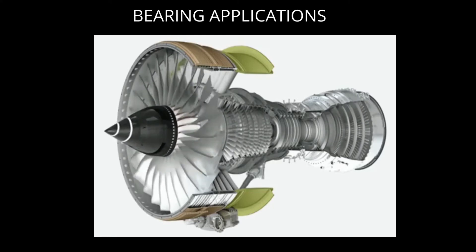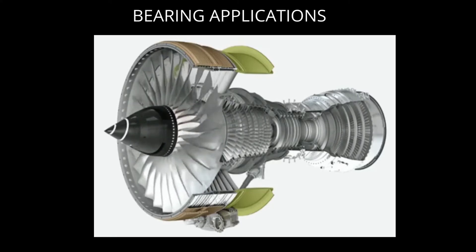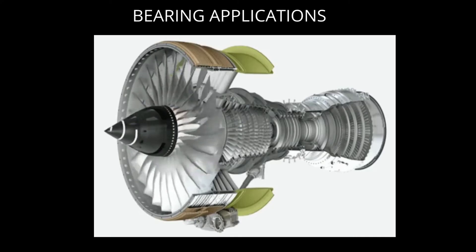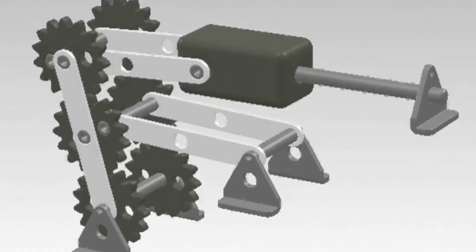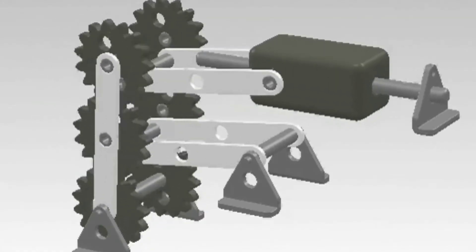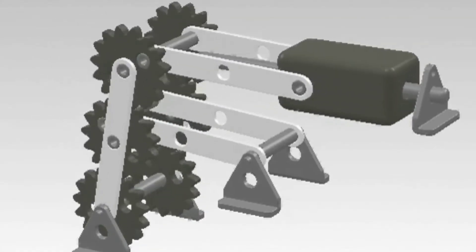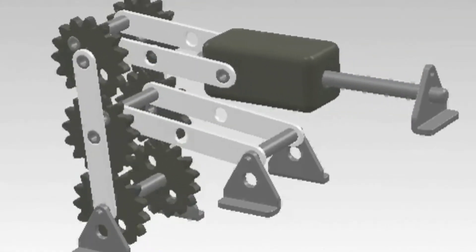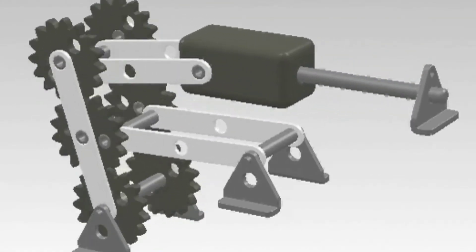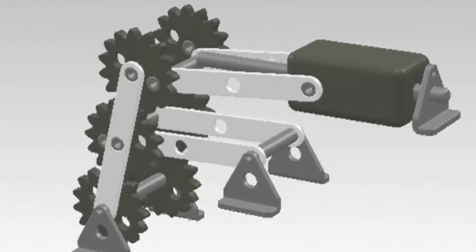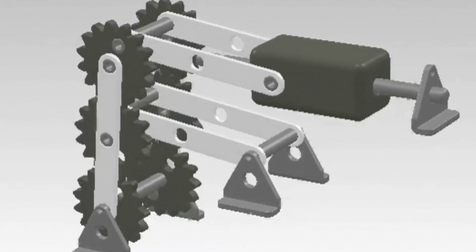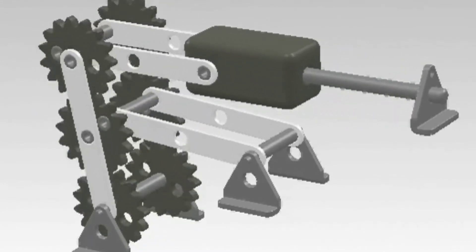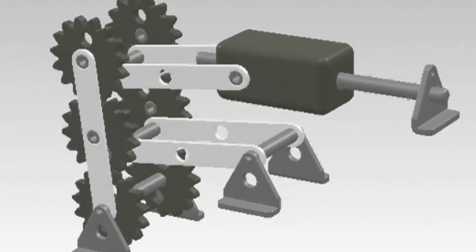Bearings support the rotating shafts of the wheels, gears, turbines, rotors, etc. Bearings are one of the most commonly used machine parts because their rolling motion makes almost all movements easier and they help reduce friction.